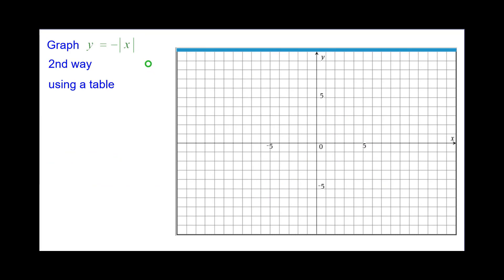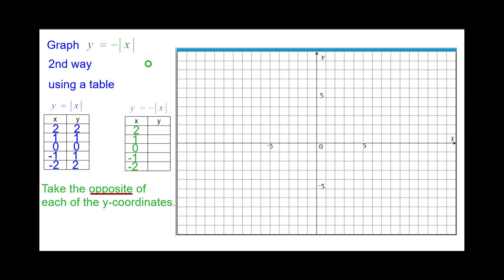Second way, we're going to use a table. So we'll start off with the traditional y equals absolute value of x table. And what we're going to do is take the opposite of each of the y-coordinates, because that's what it says to do right here.